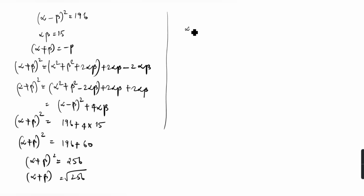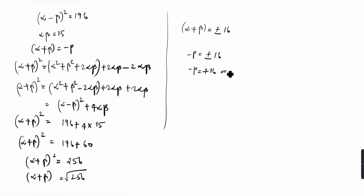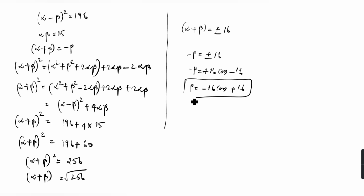Since alpha + beta = −p, we have −p = ±16, so p = −16 or p = +16. This is the second method. Which one is easiest for you? You should follow that one. Thanks for watching this video.